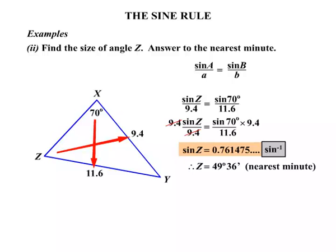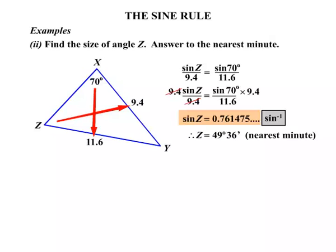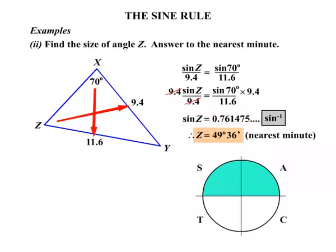Now we just go back here for a moment just to be aware that we may get an obtuse angle as a result. Remember the all stations to central. Now sine is positive in the top two quadrants, the first and second. So we've already got our acute answer. But it could also be obtuse. So let's consider this. If we mark in the 49.36 in each of those quadrants. Starting from 0. There's 90. There's 180. We don't need to go any further.